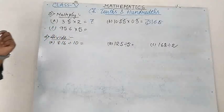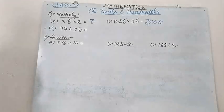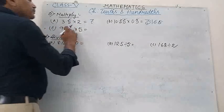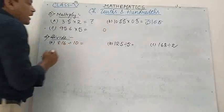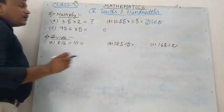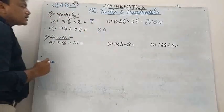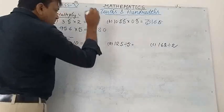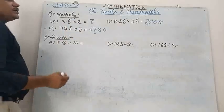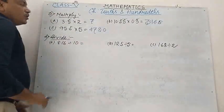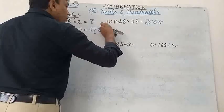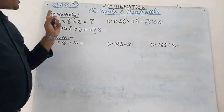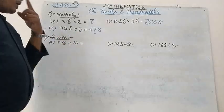Number C: 95.6 multiplied by 5. Just do the multiplication: 5 times 6 is 30, carry 3; 5 times 5 is 25 plus 3 is 28, carry 2; 5 times 9 is 45 plus 2 is 47. Total 1 digit is there after the point, so we put the point here. Our answer will be 478.